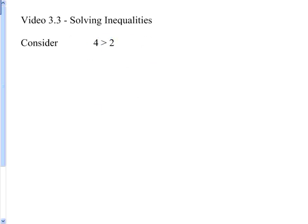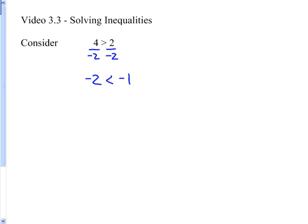When we multiply by a negative, it seems like we've got to flip that sign. What happens if I divide by negative 2? Then I'm going to get negative 2 and negative 1. Is negative 2 greater than negative 1? No, that's not right again. Negative 2 isn't greater than negative 1 — it's actually smaller than negative 1.